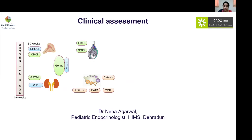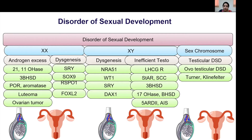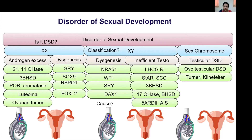DSD is not only a medical emergency but also a social emergency. The main aim of clinical assessment is to exclude life-threatening conditions like 21-hydroxylase deficiency and to determine the etiology to decide upon the gender of rearing and subsequent management. The first step is to confirm whether it is actually DSD or a normal variant such as buried penis. The second step is to broadly classify into XX, XY, or sex chromosome DSD. The third step is to identify the cause using meticulous investigation.